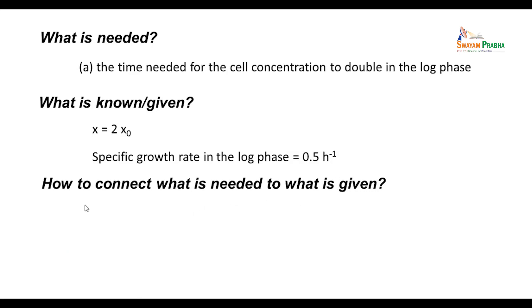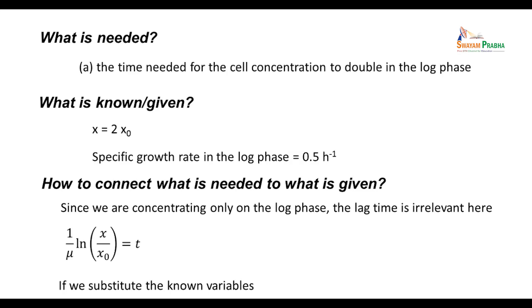How to connect what is needed to what is given? Since we are concentrating only on the log phase, 1/μ ln(x/x₀) = t. We do not have to worry about plus t₀, which is the time from the beginning of the batch. The requirement here is 2x₀/x₀, which cancels to ln(2). Therefore, ln(2)/0.5 = t.